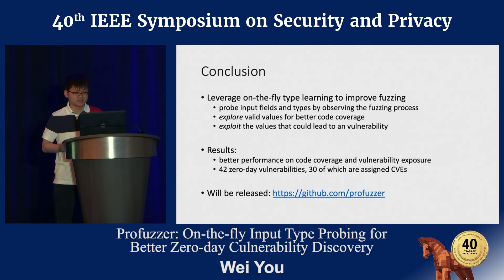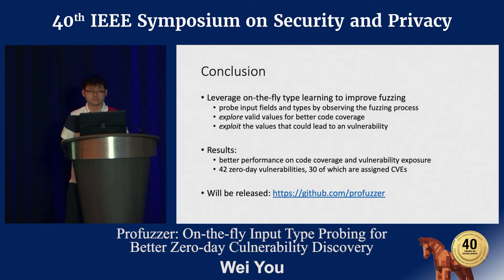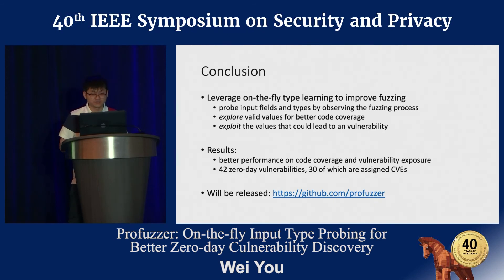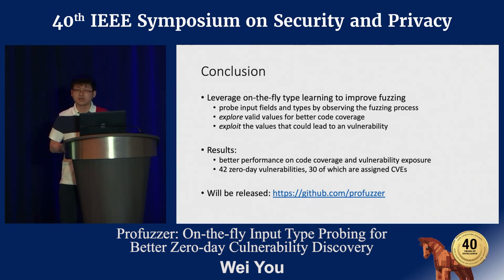In conclusion, we propose a technique that leverages on-the-fly type learning to improve fuzzing. The basic idea is to probe input fields and types by observing the fuzzing process and leveraging type information to explore more program paths and exploit potential vulnerabilities. We implemented a prototype called Profiler, which achieves better code coverage and vulnerability exposure. It discovered 40 zero-day vulnerabilities, 30 of which were assigned CVEs. The source code of Profiler will be released soon on GitHub.